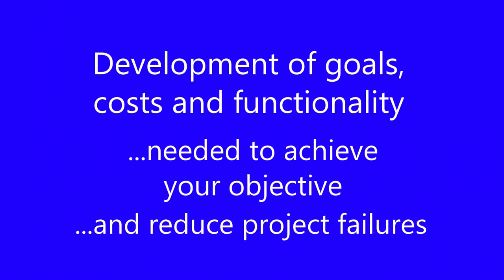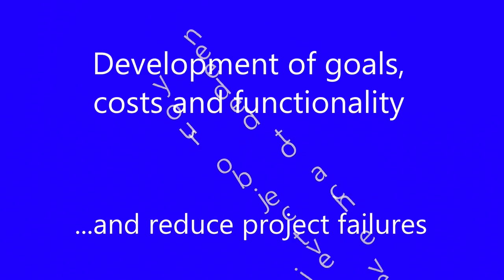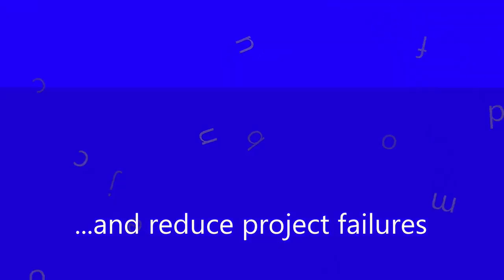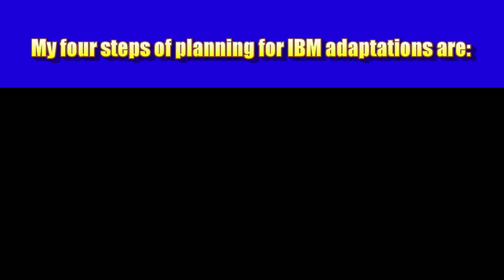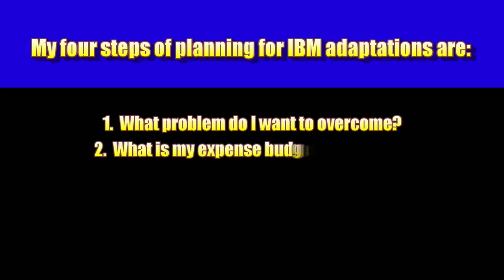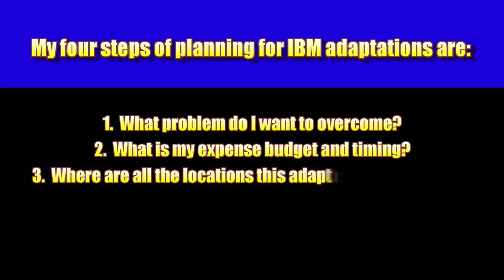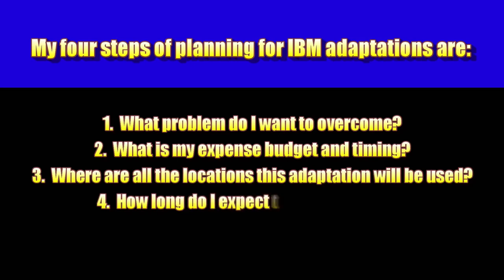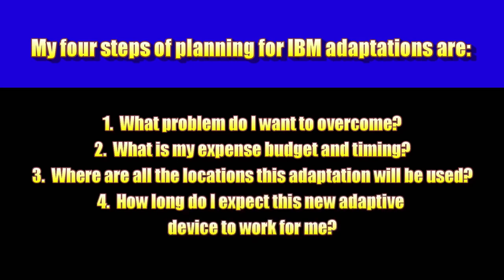Don't get discouraged by failure. Unfortunately, failure is a large part of IBM. My four steps of planning for IBM adaptations are: 1. What problem do I want to overcome? 2. What is my expense budget and timing? 3. Where are all the locations this adaptation will be used? 4. How long do I expect this new adaptive device to work for me? When you've answered and documented these previous points, you are on your way to a successful adaptation.